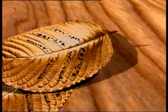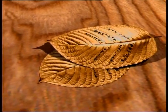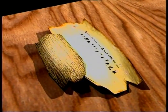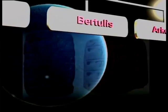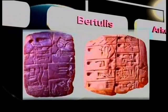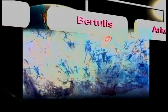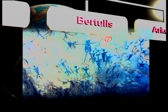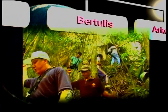Sumber bertulis turut ditemui pada daun, kulit kayu, batu yang dipahat, dan lakaran yang terdapat dalam gua. Maklumat yang terdapat pada bahan-bahan ini membolehkan para sejarawan mendapatkan maklumat tentang peristiwa, tokoh, dan adat resam sesuatu masyarakat dan tamadun.